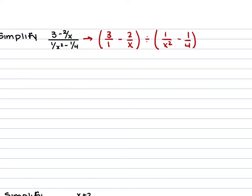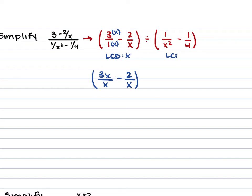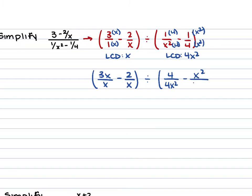From here, find your least common denominator for both sets of parentheses. From the first, the least common denominator is x. So the first fraction within the first set of parentheses gets multiplied by x top and bottom, giving us 3x/x minus 2/x. For the second set of parentheses, the least common denominator is 4x squared. The first fraction gets multiplied by 4 top and bottom, and the second gets multiplied by x squared, giving us 4/(4x squared) minus x squared/(4x squared).